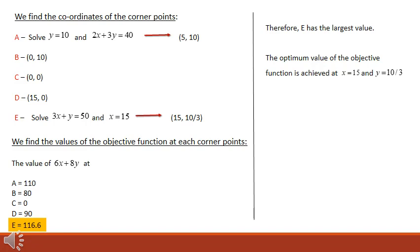The optimum point is that which maximizes the objective function. The value of 6x plus 8y at A is 110, at B it is 80, at C it is 0, at D it is 90, and at E it is 116.6. E has the largest value, which matches the first method. So the optimum value of the objective function is achieved when x equals 15 and y equals 10/3.